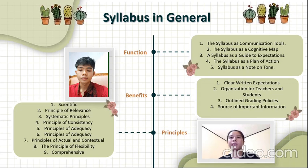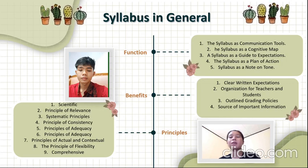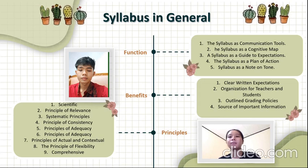And the last is comprehensive. This principle provides direction that the development of syllabus indicators should cover the entire domain of competence. Apart from that, it is ideally suited to the development of learning materials, learning activities, and learning assessment. This overarching principle needs to be placed in the achievement of competence as a reflection of knowledge, values, attitudes, and action, and are manifested in various life skills.